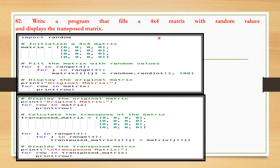The next program fills a 4x4 matrix with random values and displays the transpose matrix. First, the random module is imported to generate random values, then a 4x4 matrix is initialized with all elements set to 0. Using a nested for loop, the program iterates over each position and assigns a random value generated using random.randint(1, 100). After filling the matrix, it displays the original matrix by iterating over each row and printing it. A 4x4 transpose matrix is then initialized, and using a nested for loop the program swaps row and column indices to populate the transpose, which is then displayed.